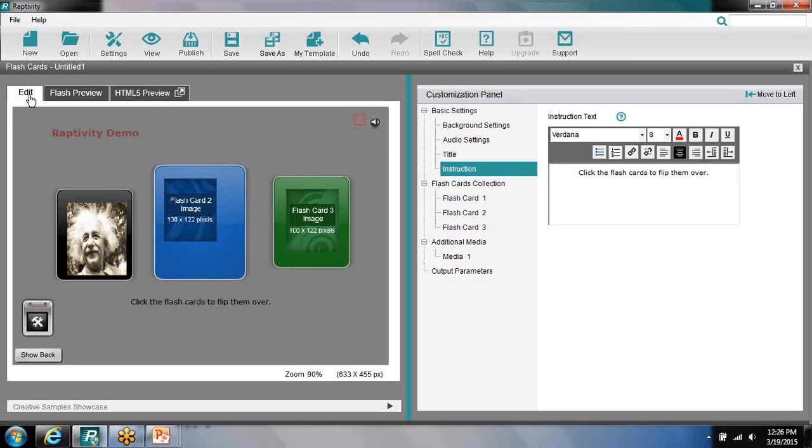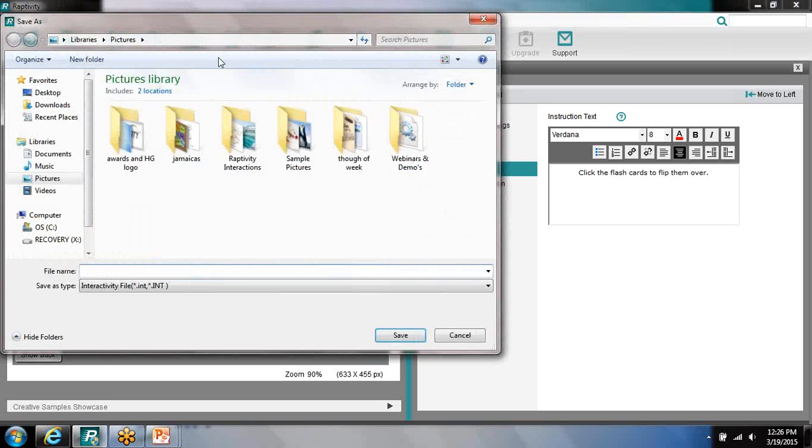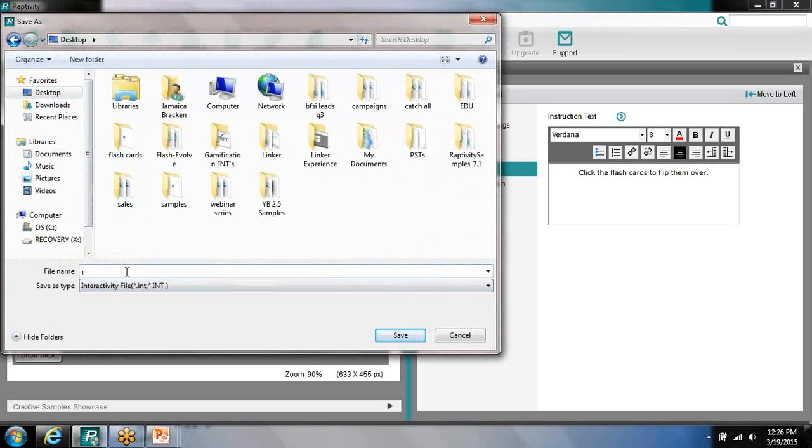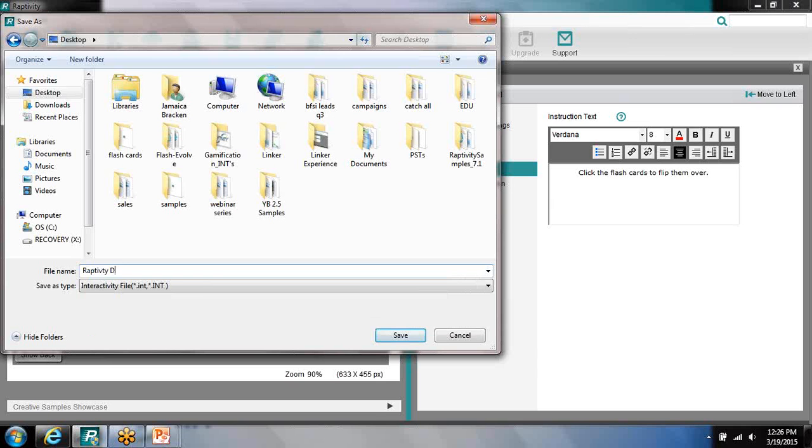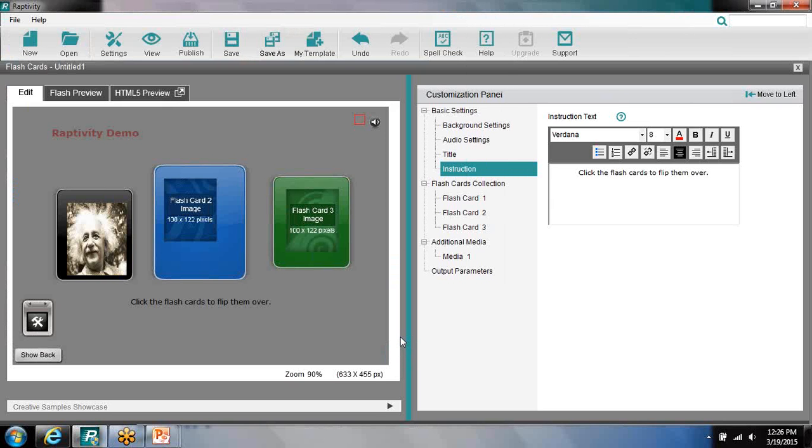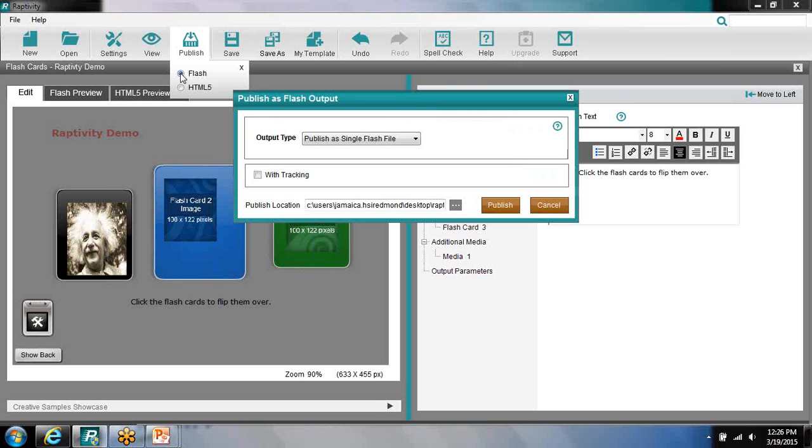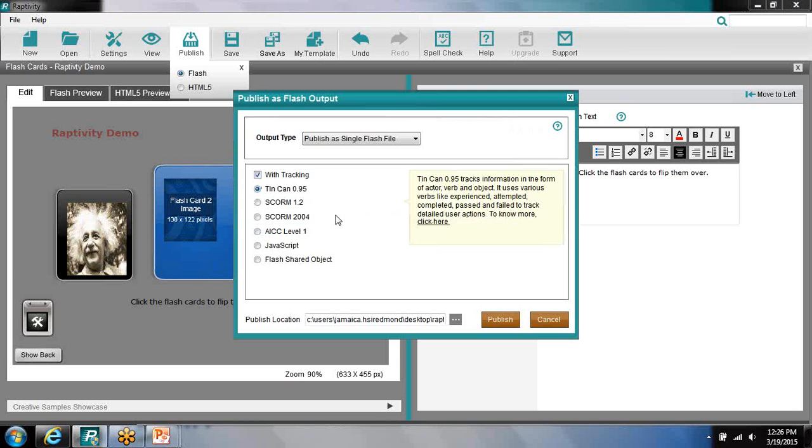Now, once you've completed your customization, it's time to save and publish. So you simply come to the main menu here and choose the save option. And you'll just simply choose a location and a name for your interactivity file. Go ahead and just call ours, Raptivity Demo. We'll go ahead and say save. And now we can see that our interaction has a name. So now we're going to come to the publish option. And we just simply choose our format. I'm going to go ahead and choose flash. And then we have tracking options to choose from if we'd like tracking so we can activate those options.